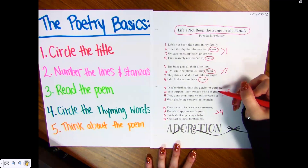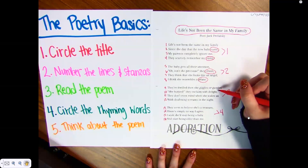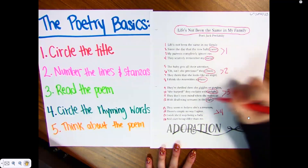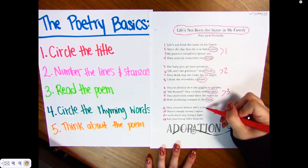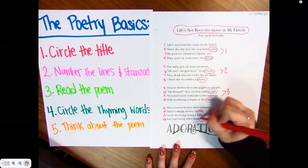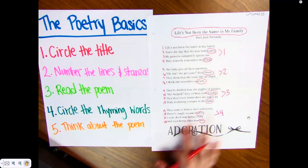Now my next ones: gurgles and us — does that rhyme? That doesn't rhyme. What about delight and night? Delight, night — that rhymes, right? What about treasure and baby? No. What about agree and me? They do rhyme, right? All right, so I've circled my rhyming words.